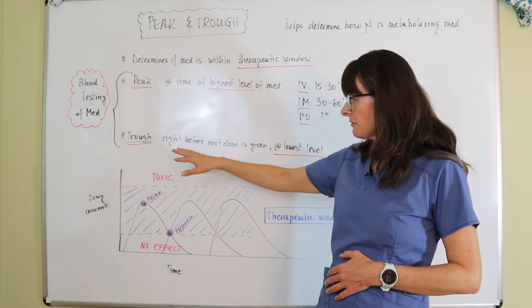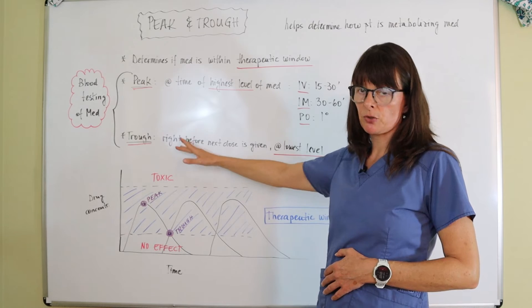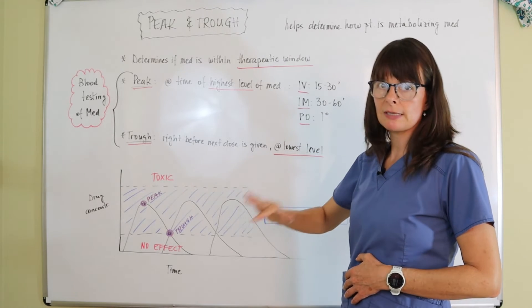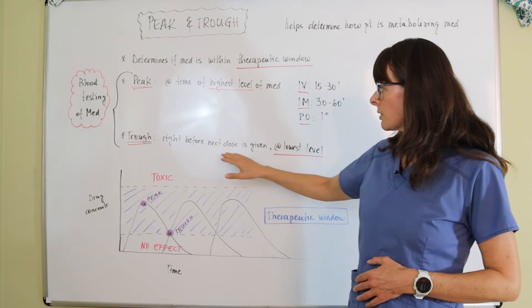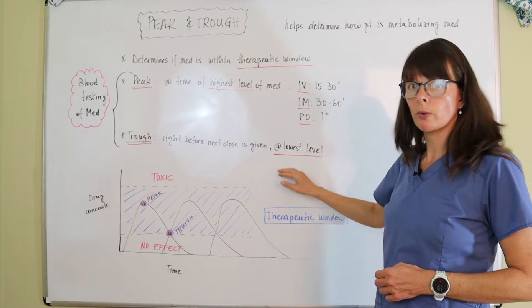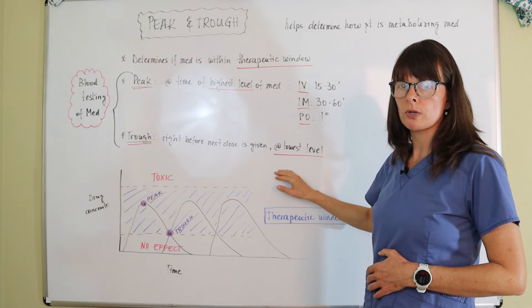And then trough is the other end of the spectrum, which is the lowest level of the medication in the patient's blood, which is tested right before the next dose is given, when the medication is at the lowest level.